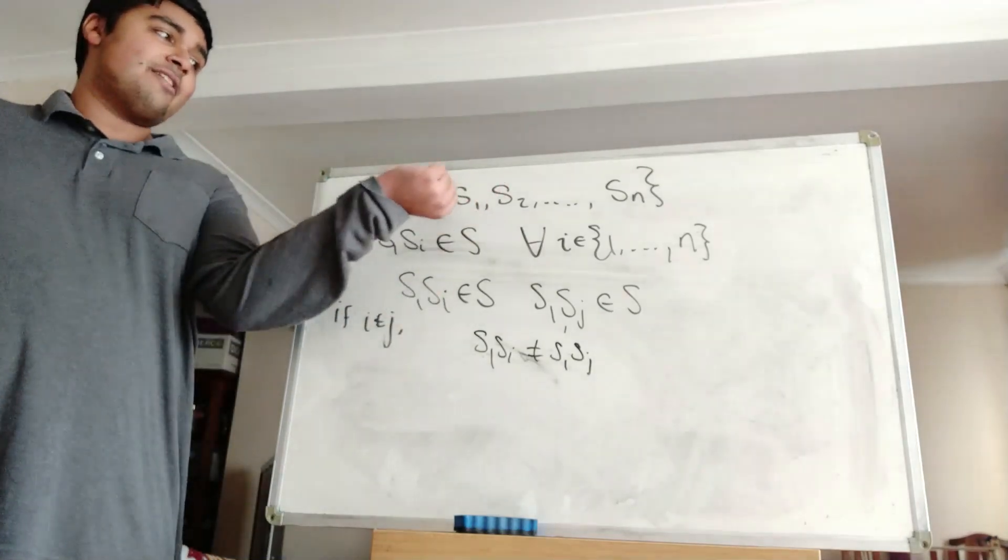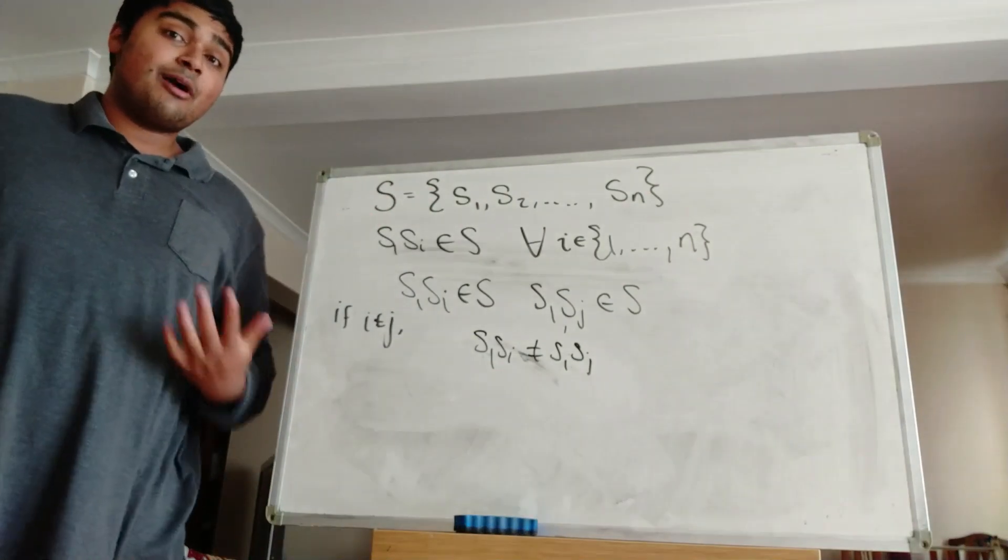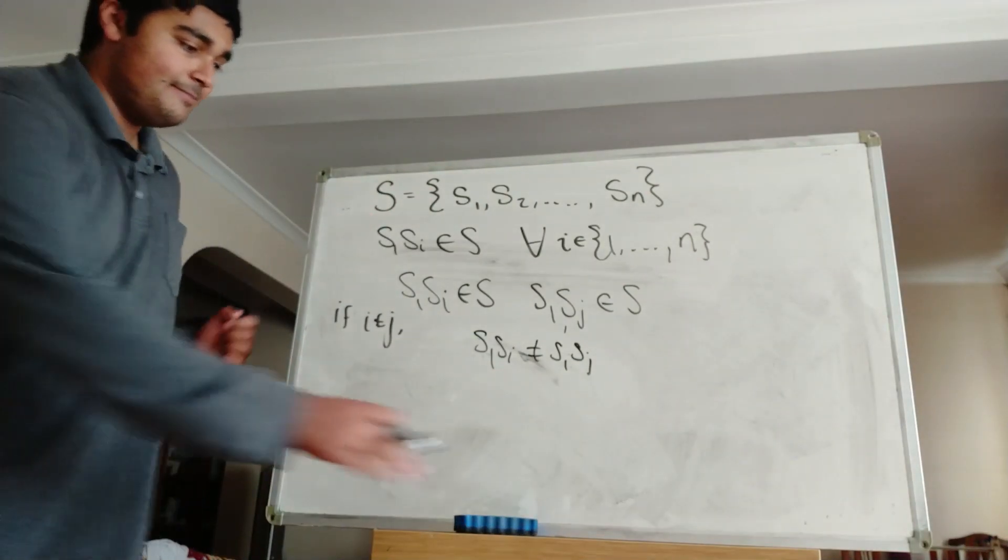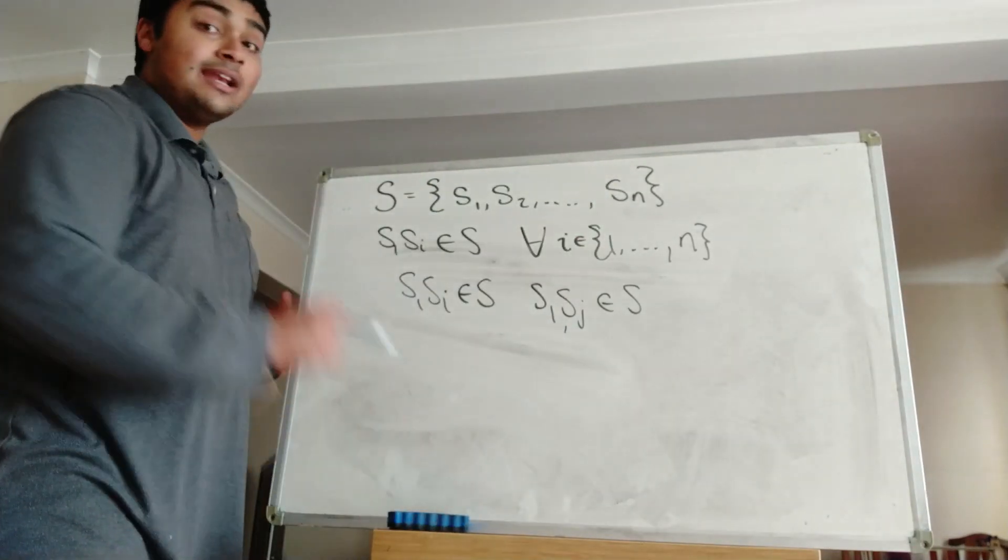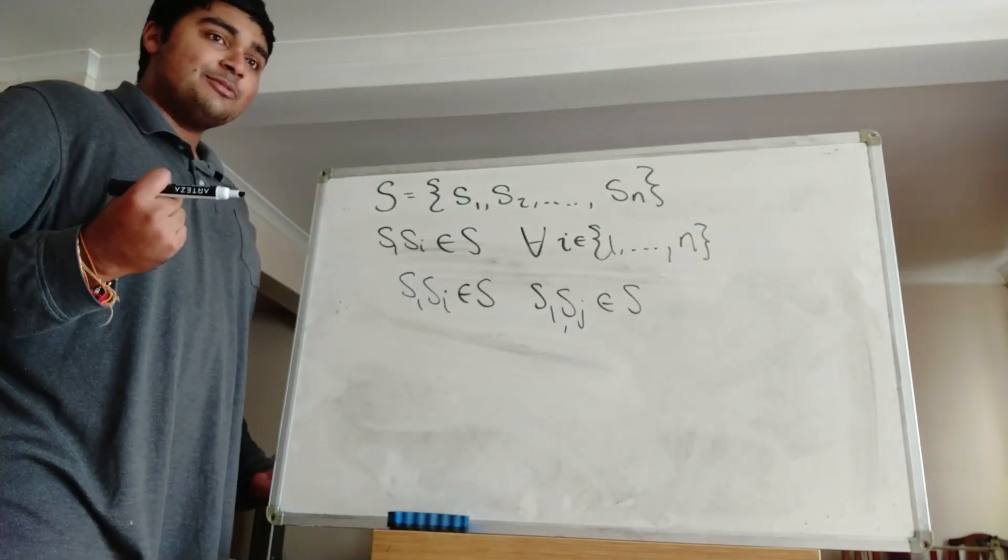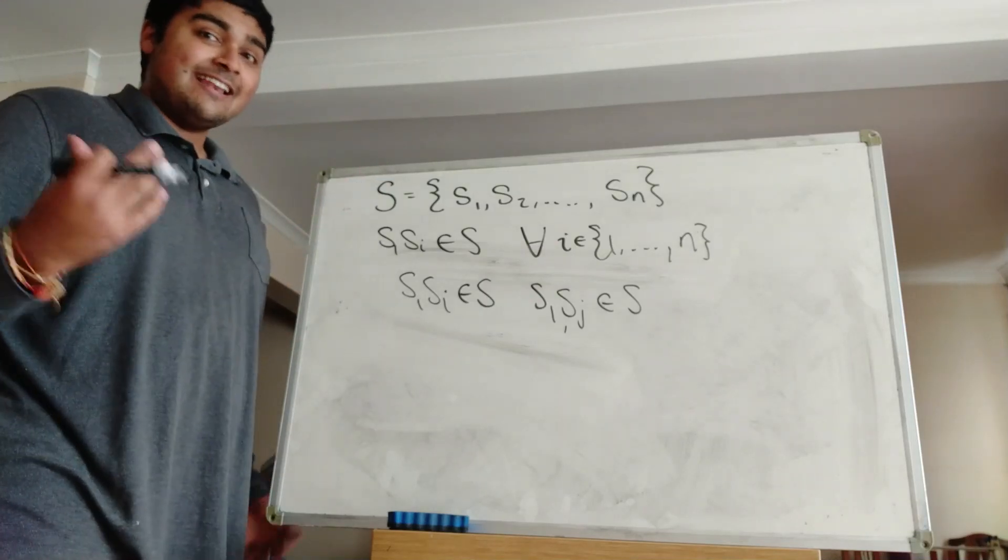Okay, but then that means that if I multiply each of the elements in this guy here by S1, I'm going to get a set with N elements in. So in other words, when I multiply each of these guys by S1, I know it's going to be in S, and I know I'm going to produce a set with N elements in, but I know S has N elements.